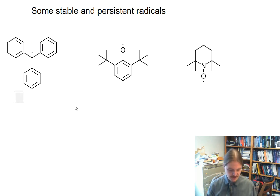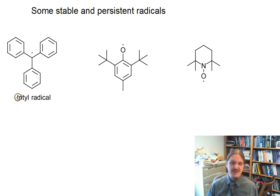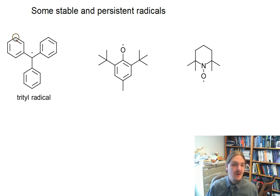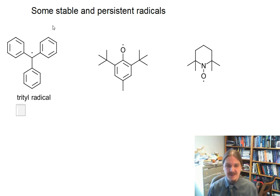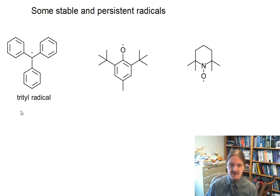The first example here on the left-hand side is the trityl radical, where trityl is actually short for triphenylmethyl. This radical in the center with all these aromatic rings around it has so many different resonance structures that it is persistent or stable. In fact, you can buy this radical as its own chemical species and store it. The trityl radical, because of its unique stability, is also the very first organic radical that was ever discovered and isolated.